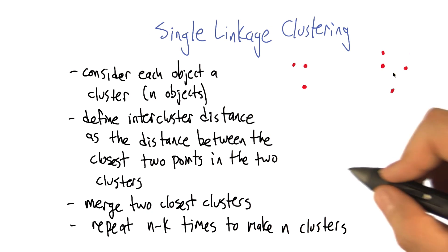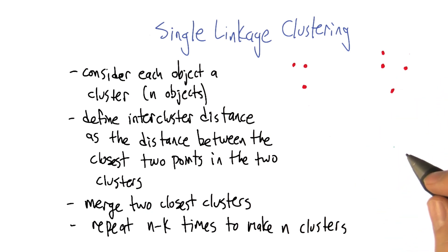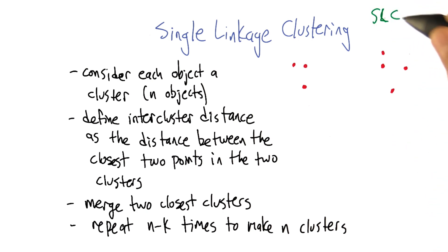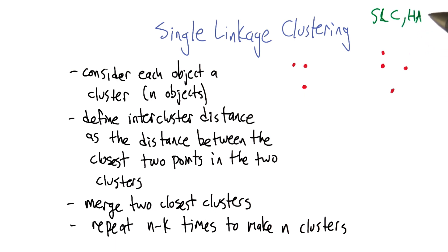It would be good if we could recover that kind of structure algorithmically. So let's talk through this algorithm. It's called single linkage clustering, sometimes SLC — or 'slick.' It's a hierarchical agglomerative clustering algorithm, or HACK. I like that acronym even better. That's an Andrew Moore joke for what it's worth. So: it's a slick hack.